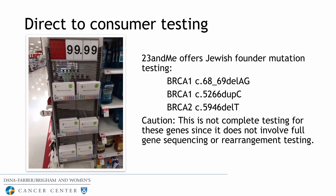Regarding direct-to-consumer testing with 23andMe, they offer testing of three Jewish founder mutations — two in BRCA1 and one in BRCA2. This is not complete testing for these genes since it does not involve full gene sequencing or rearrangement testing. If an individual is at risk, it's better to come in for a clinical evaluation to consider more comprehensive testing.